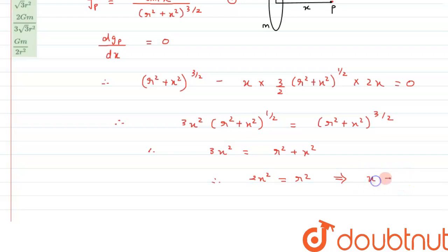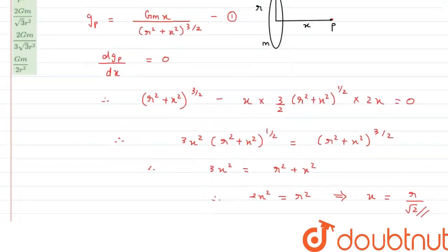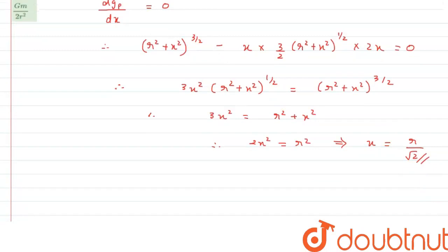From here, the value of X will be equals to R by root 2. So this is the value, and if you substitute this value in equation 1, we can get the maximum value of it.